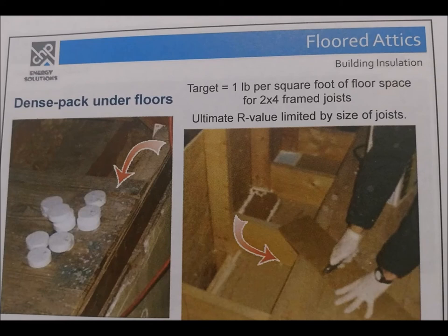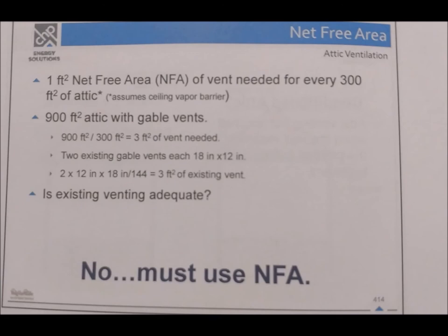Floored attics: Dense pack under floors — the target is one pound per square foot of floor space for a 2×4 frame joist. Ultimate R-value is limited by the size of the joist. Net free area (NFA): one square foot of NFA vent needed for every 300 square feet of attic, assuming a ceiling vapor barrier. Example — 900 sq ft attic with gable vents: 900 divided by 300 equals 3 sq ft of vent needed. Two existing gable vents each 18×12 inches: 2 times 216 equals 432 sq in equals 3 sq ft of existing vent. Is existing ventilation adequate? No — must add NFA.